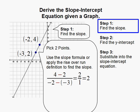4 minus 2 is 2, negative 2 minus negative 3, and remember when you subtract a negative it is the same thing as adding, so negative 2 plus 3, and that gets you 1, and 2 over 1 reduces to 2.